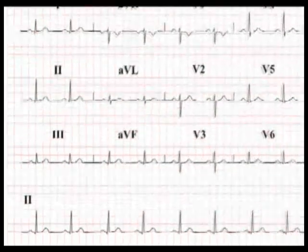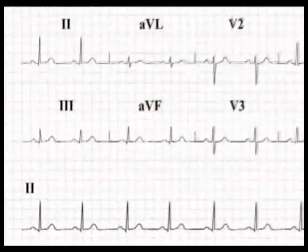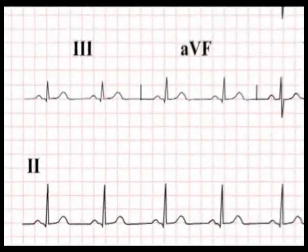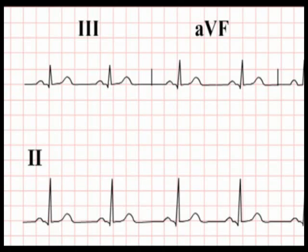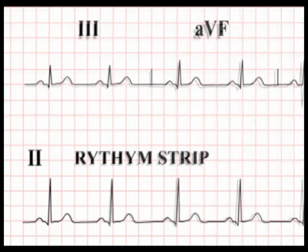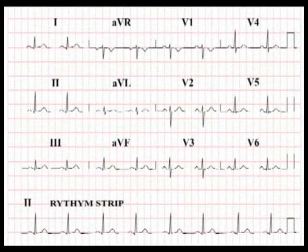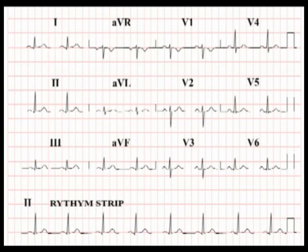If you look at the bottom of the ECG readout, you will see a long run of recording from lead 2. This is called a rhythm strip. We use the rhythm strip to calculate the heart rate and to diagnose abnormal cardiac rhythms. Lead 2 is used as the rhythm strip as it is the easiest lead in which to see P waves, and identifying P waves is the key to interpreting rhythm disturbances on an ECG.